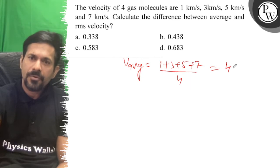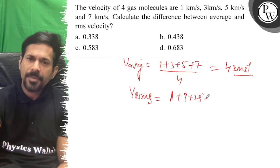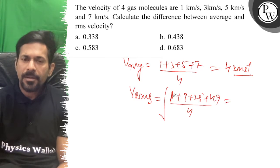16 by 4 equals 4 kilometers per second. For vrms, square mean root: 1 + 9 + 25 + 49, and divide by 4 ka under root. So you get 50, 75... 9, 75, and 9, that becomes 84.